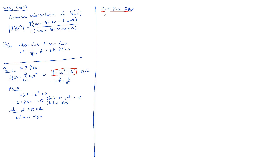Every filter — every system, and I'm using the word system interchangeably with filter here — has a phase function. That phase function is simply the angle of our DTFT, H of e to the j omega. In general, that DTFT's angle is going to change with frequency.